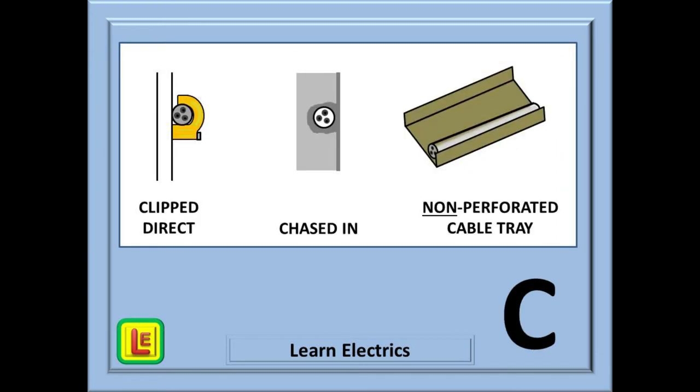What can we make of this slide? A cable can be clipped direct to a wall with a cable clip or similar. A cable can be chased into the wall and skimmed over with plaster. A cable can be on a non-perforated or complete cable tray. Hopefully, you're ahead of me now. What letter does clipped direct begin with? C. What letter does chased in begin with? C. And what letter does complete cable tray begin with? C. What is the reference method then? C.